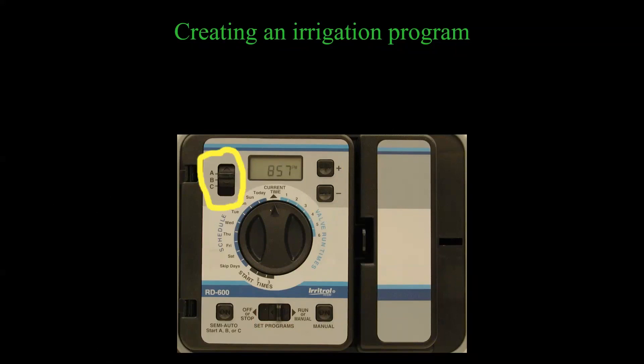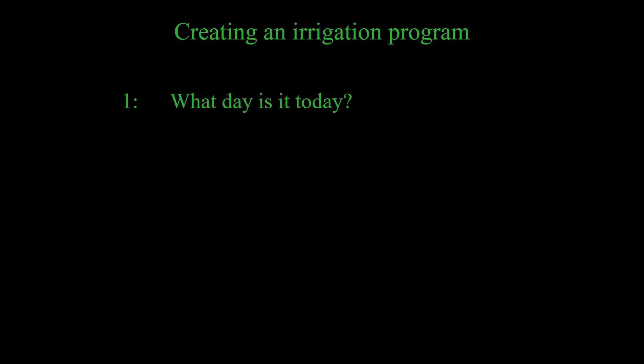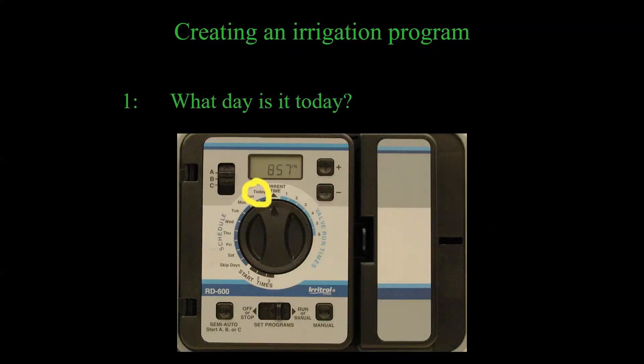The first thing a controller needs to know — especially if it's just been powered up — is what day it is today. When I first power up this controller, it thinks it's Sunday. So if I tell it I want to water my grass on Monday and Thursday, it won't do it because it's not aware of the current day. On this one, I'm in the set program position and I turn my dial to where it says 'today.' My controller still thinks it's Sunday, so I use my plus button — and now it says 'Th' for Thursday. Now it knows it's actually Thursday.